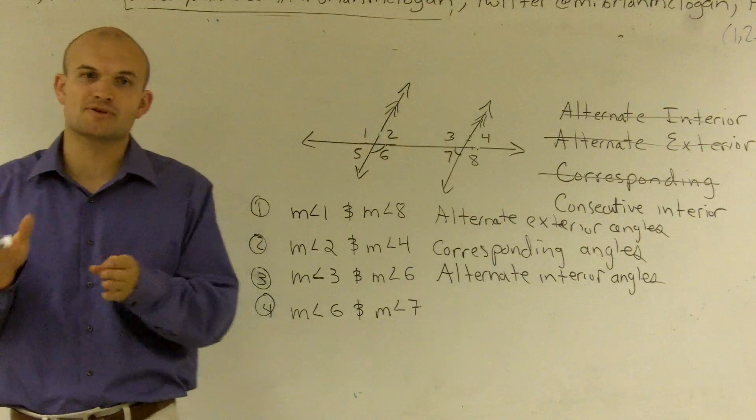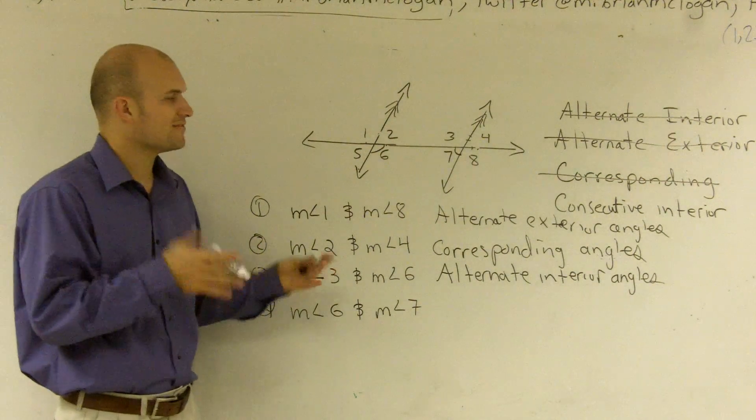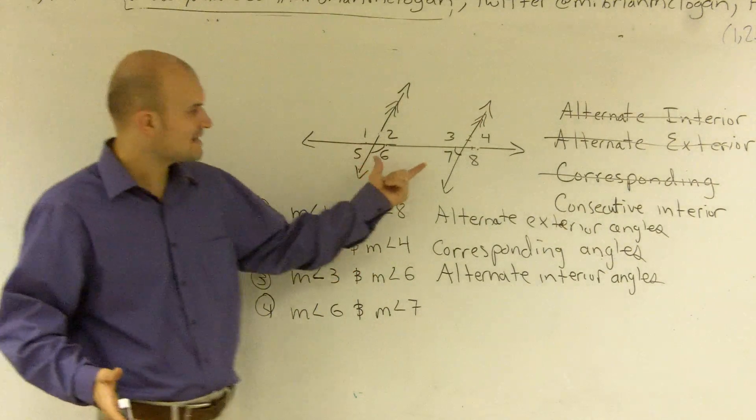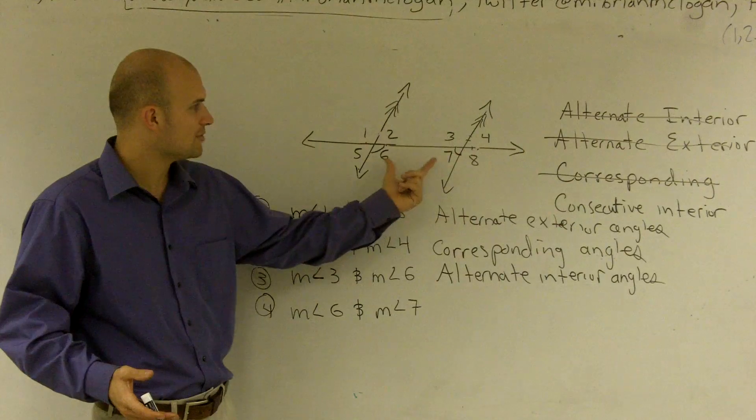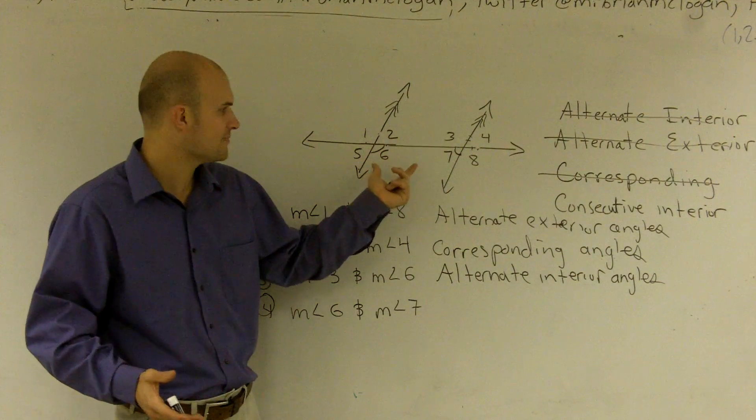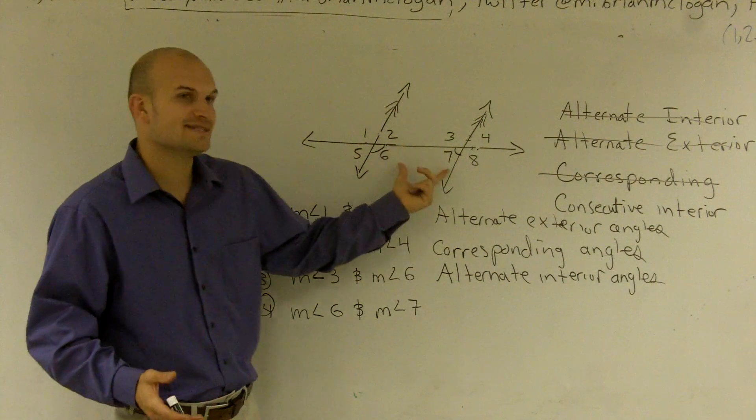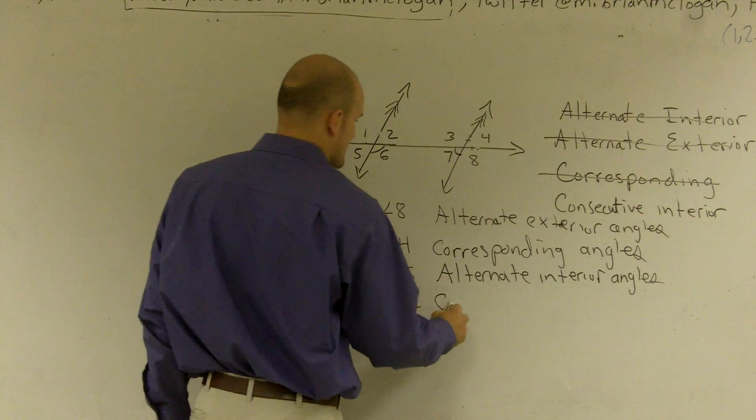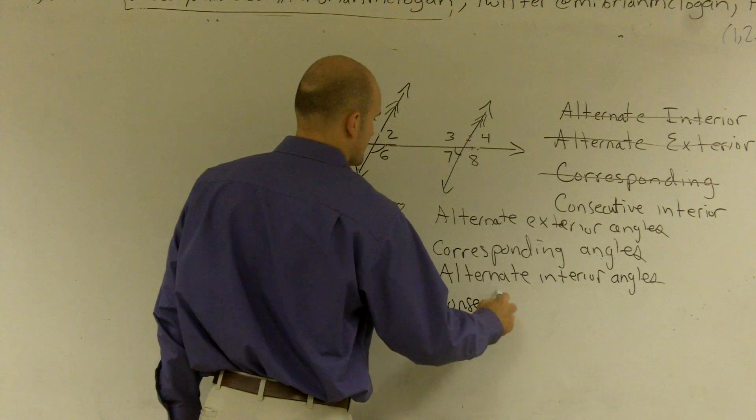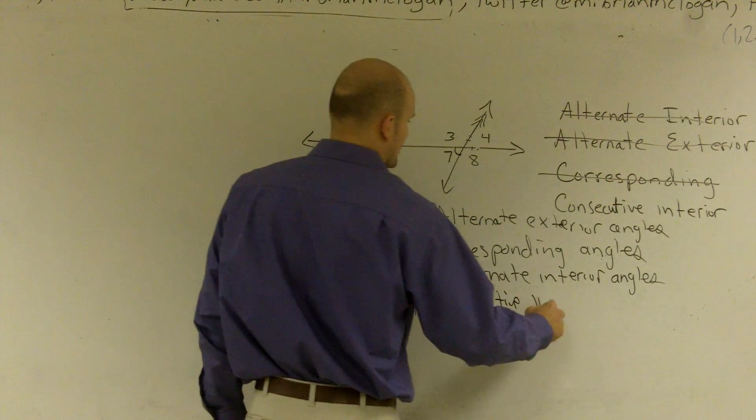Well, that can kind of play along with these two. These angles are kind of right next to each other as far as, you know, down below here. So they're right next to each other as far as, and they're both interior. So that's why we call measured angles six and seven consecutive interior angles.